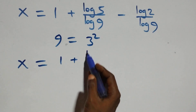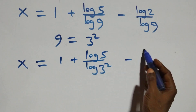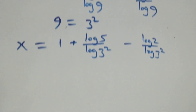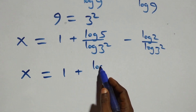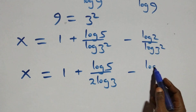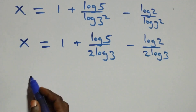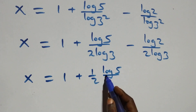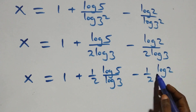In the same way, log 9 is log 3 squared, and log 9 is also log 3 squared. We apply the power rule of logarithms — the 2 comes down — and we have x equals to 1 plus log 5 over 2·log 3 minus log 2 over 2·log 3.